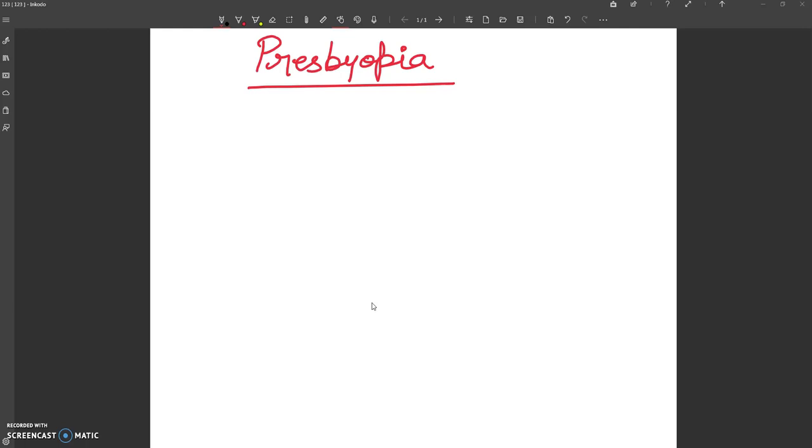I will tell you about a common eye defect which is called as presbyopia. So this eye defect is also known as old age long-sightedness. I have already posted a video on long-sightedness which is called as hypermetropia. So this is old age long-sightedness.